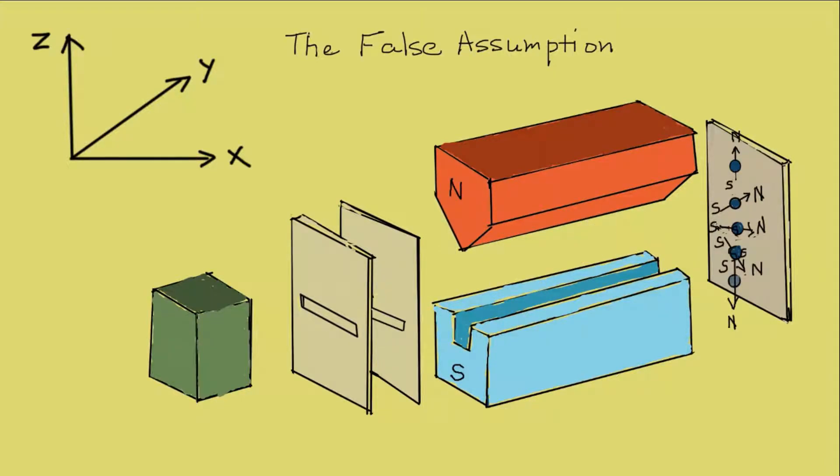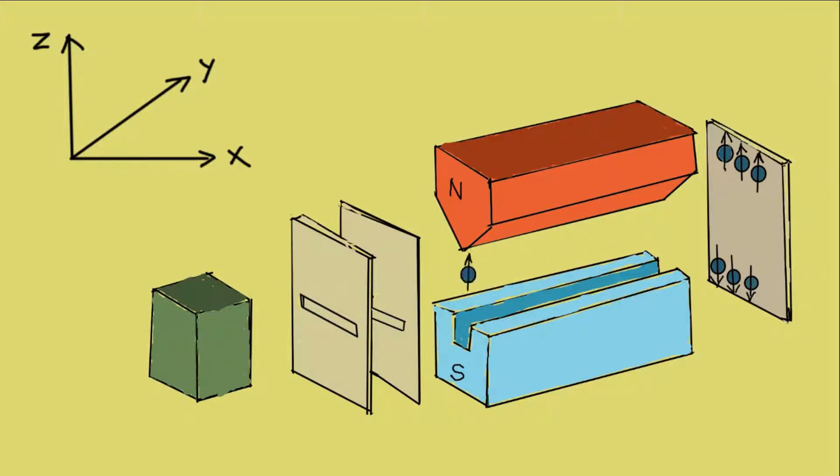In reality, we see that the atoms, once they enter the magnetic field, split into only two values of mu z instead of the continuum of values assumed previously. The two values are minus h-bar by 2 directed upwards and plus h-bar by 2 directed downwards.